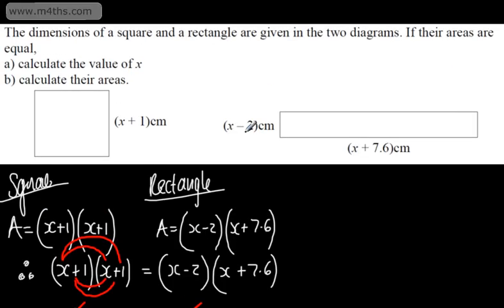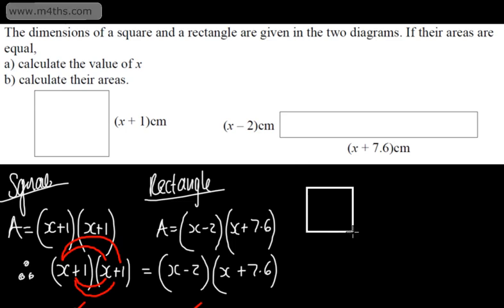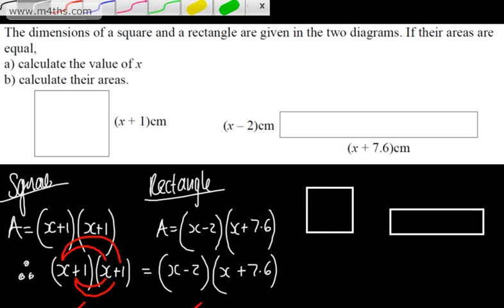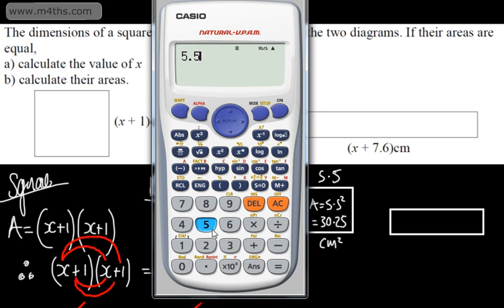That isn't answering the question though. Often students solve for the unknown but don't actually answer the question. If we bring back the square and rectangle, we know these have equal areas. With x equal to 4.5, each side of the square is 5.5, so the area is 5.5 multiplied by 5.5, which is 5.5 squared, giving us 30.25 centimetres squared.